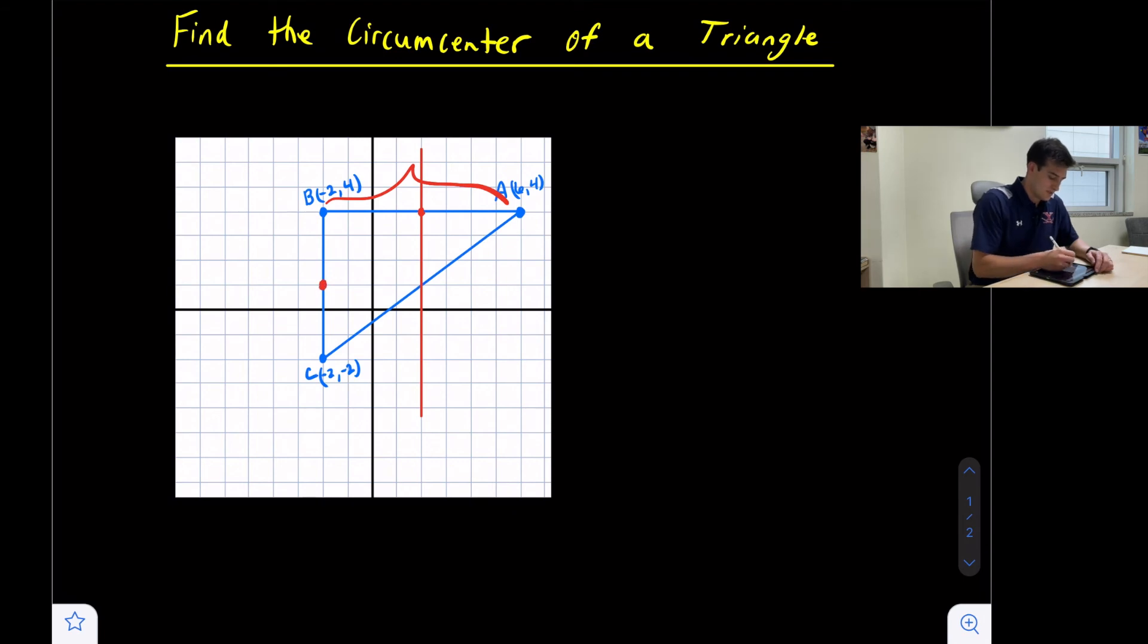Since BC is a vertical line, we can draw a horizontal line as its perpendicular bisector. Now look where we have located the intersection. We have found our circumcenter and it's located at two comma one.